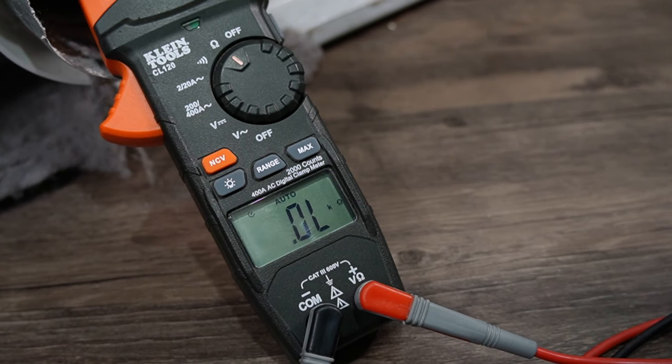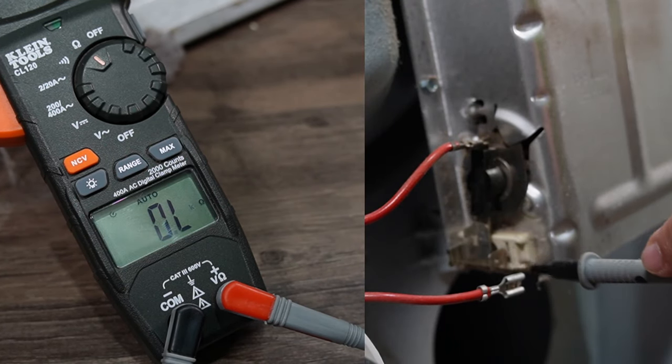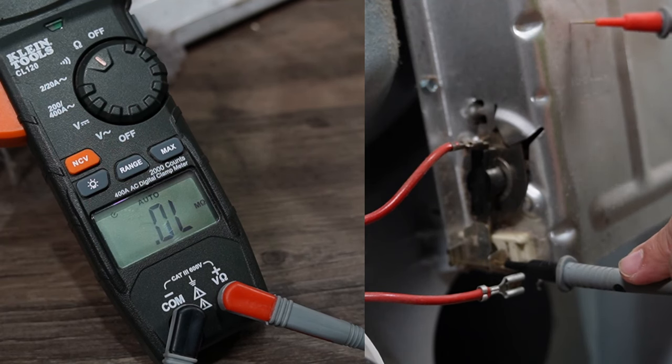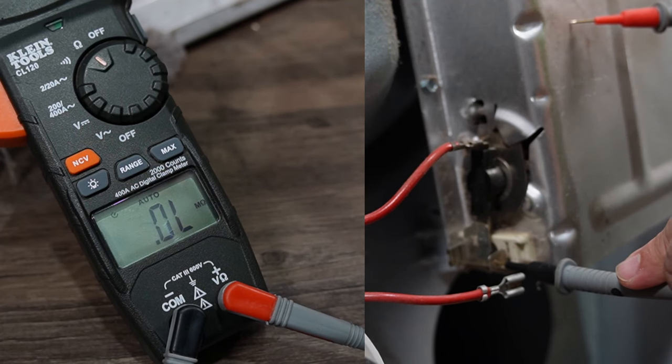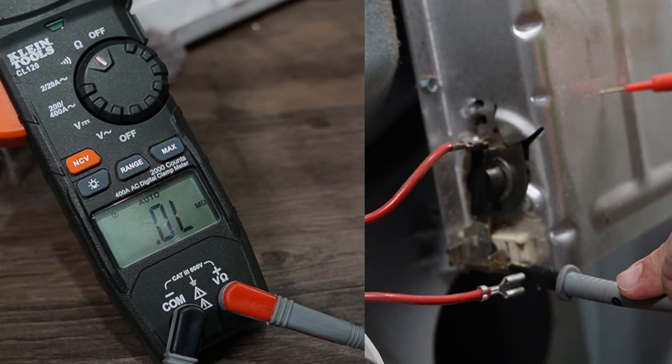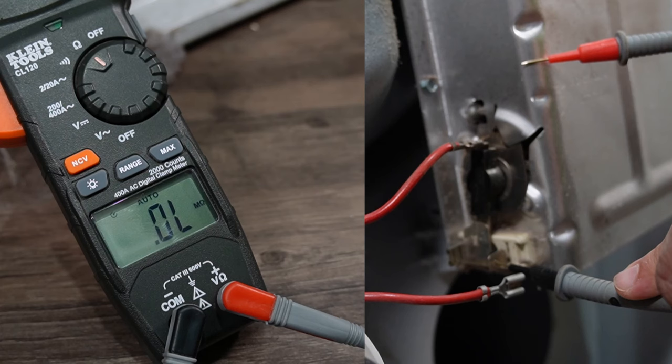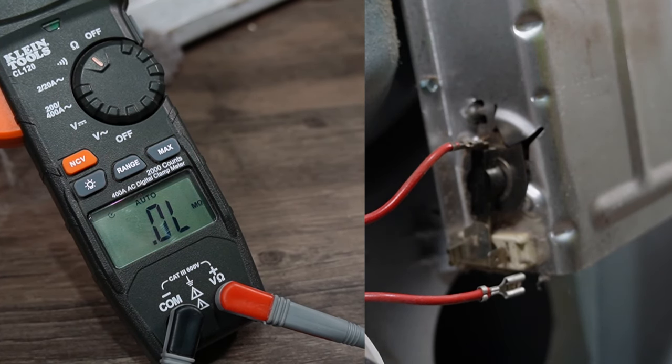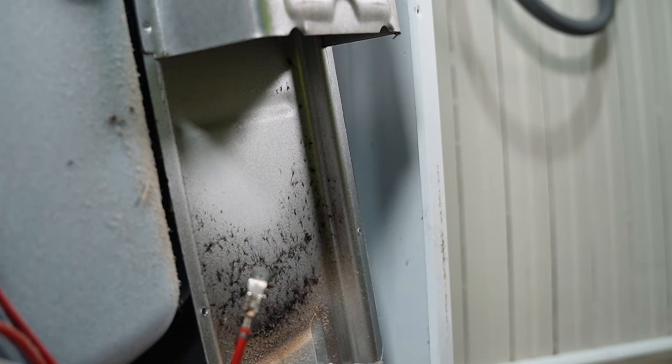One other test you can do with the element itself is to put the meter in continuity and then put the lead on one spade connector, then tap the other lead on the element casing itself. If it beeps or gives you a measurement, then the heater is grounded to the cabinet, which is very dangerous. It can give you some heat while the system itself is essentially burning itself up, which could damage your dryer and cause a lot of major awful issues.